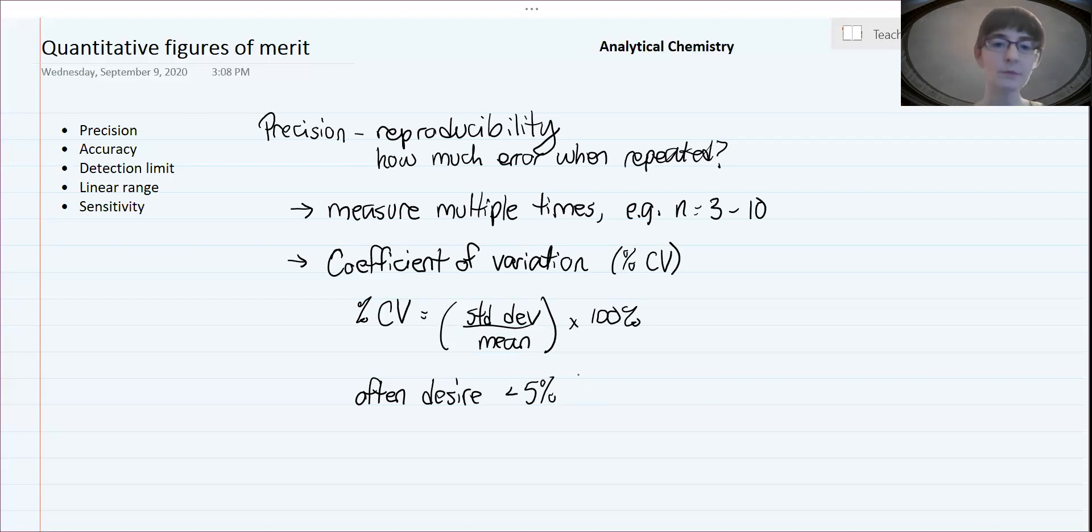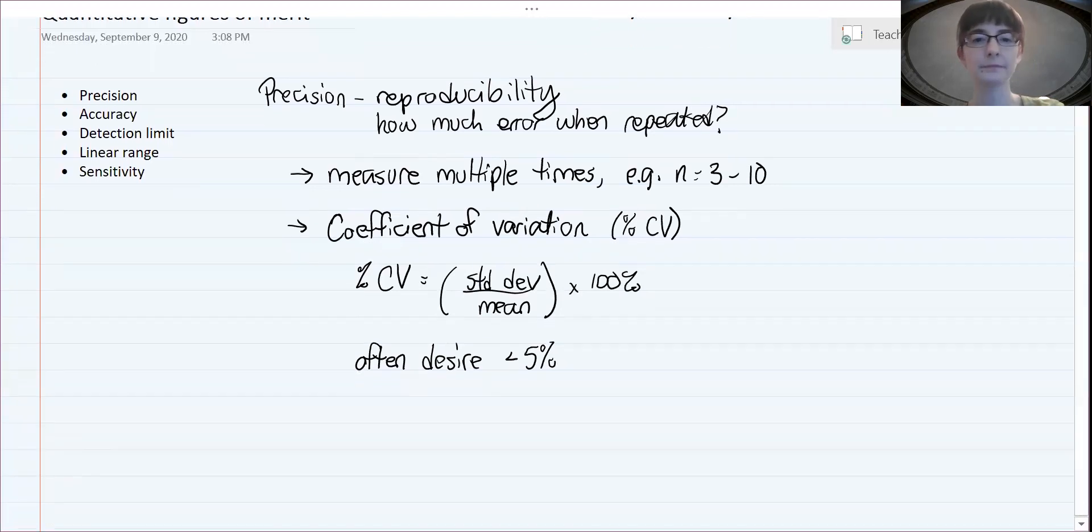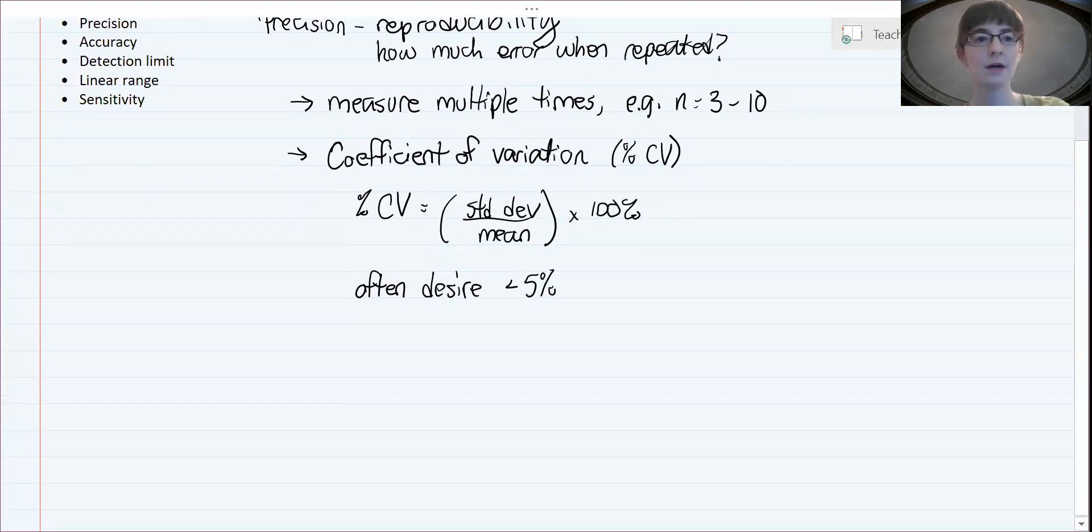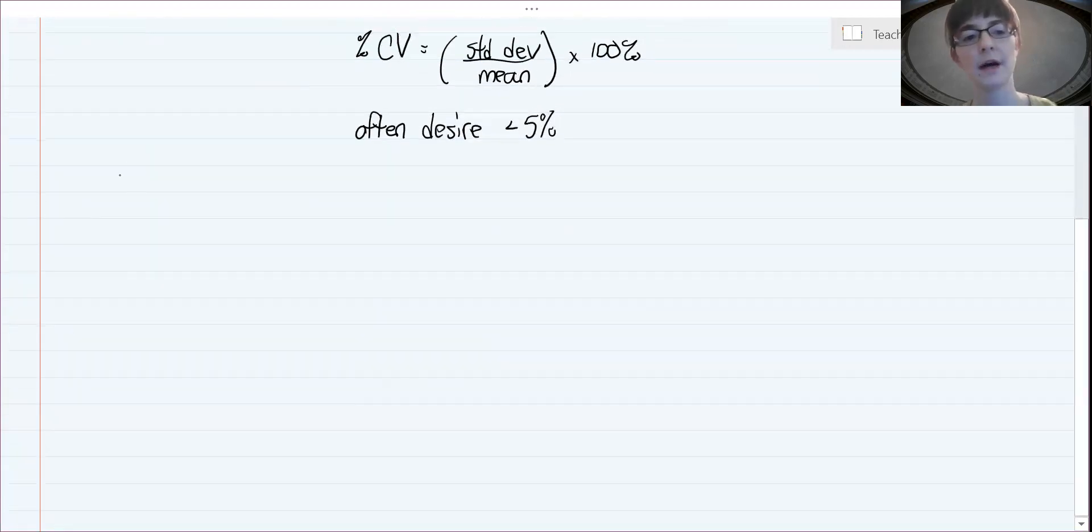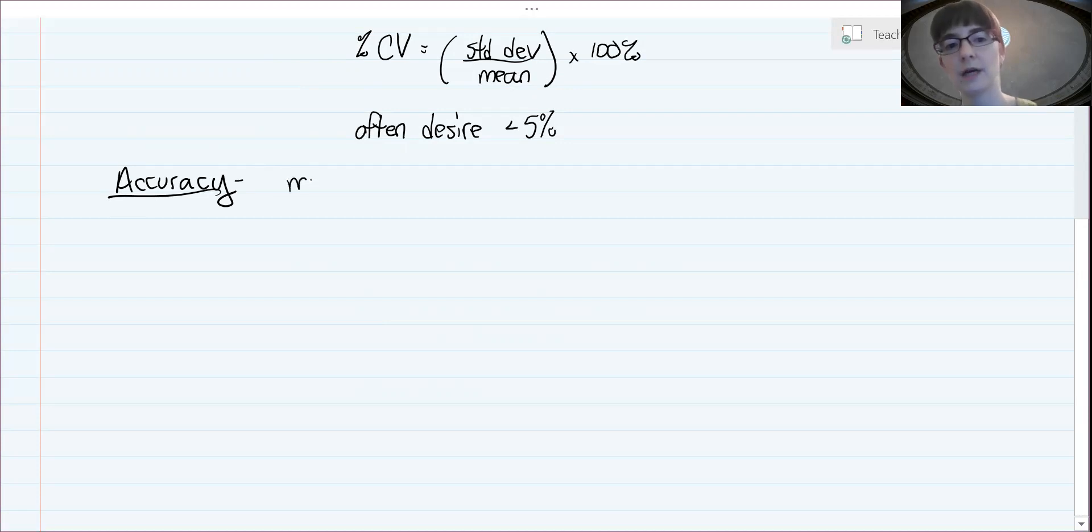If we can get there, then that is often considered acceptable and is a good starting point when you're learning analytical chemistry. So that's precision and how to calculate percent CV. Now, what if we want to quantify accuracy, meaning how close to the right answer your measurement is?